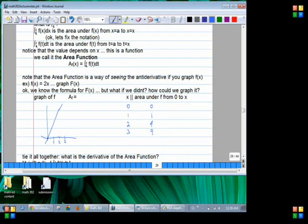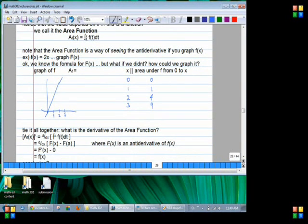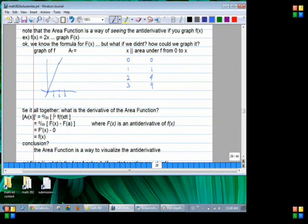So let's tie this all together. If you have the area function and you take the derivative, what are you going to get? You're going to get the function you started with. Because the area function is the antiderivative of this function. So if you take the area function and then take the derivative, you just get your original function back. And that is why I say the area function is a way to visualize the antiderivative.